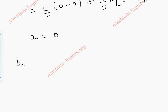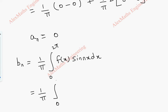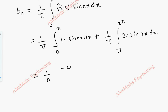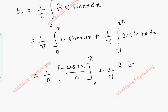Now for bₙ, the formula is bₙ = (1/π) integral from 0 to 2π of f(x)·sin(nx) dx. Split into two parts: (1/π) integral from 0 to π of 1·sin(nx) dx, plus (1/π) integral from π to 2π of 2·sin(nx) dx. Integration gives −cos(nx)/n evaluated at the respective limits.